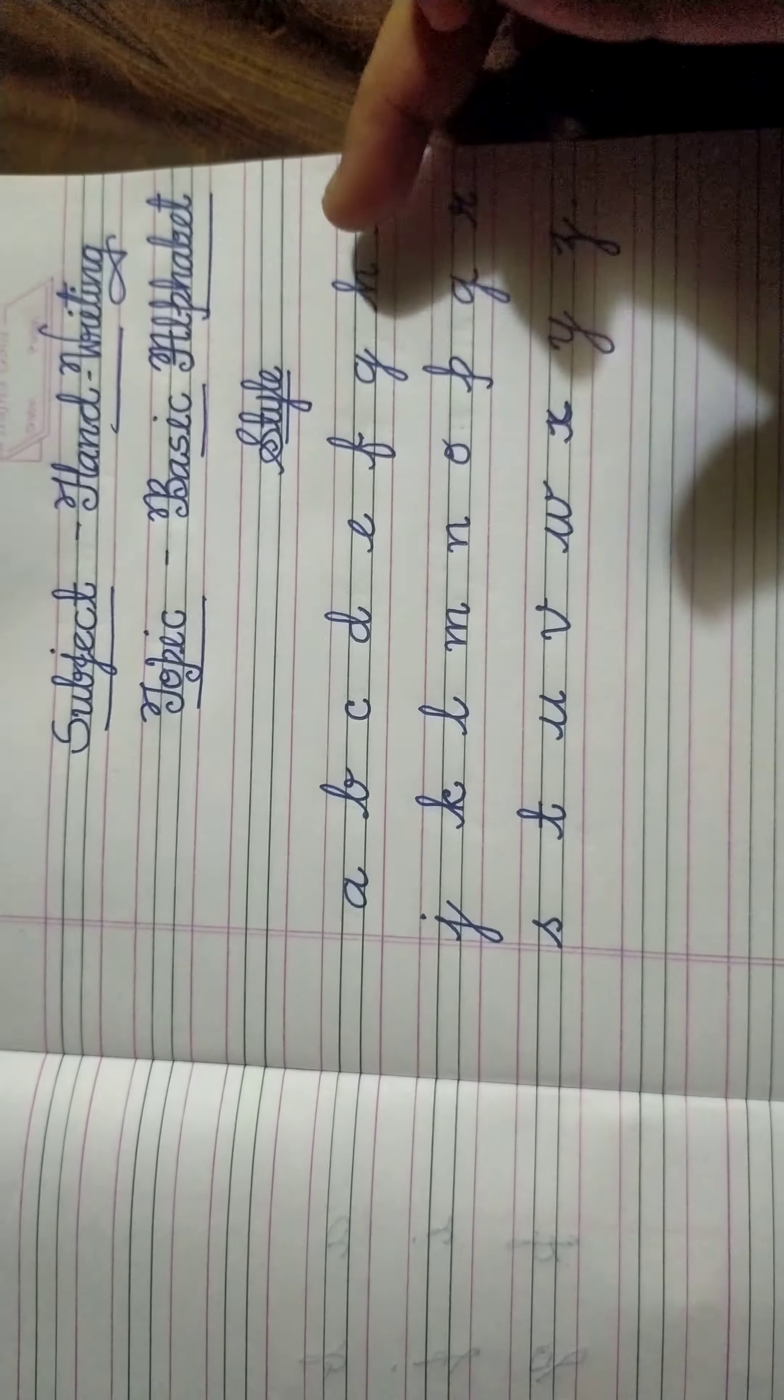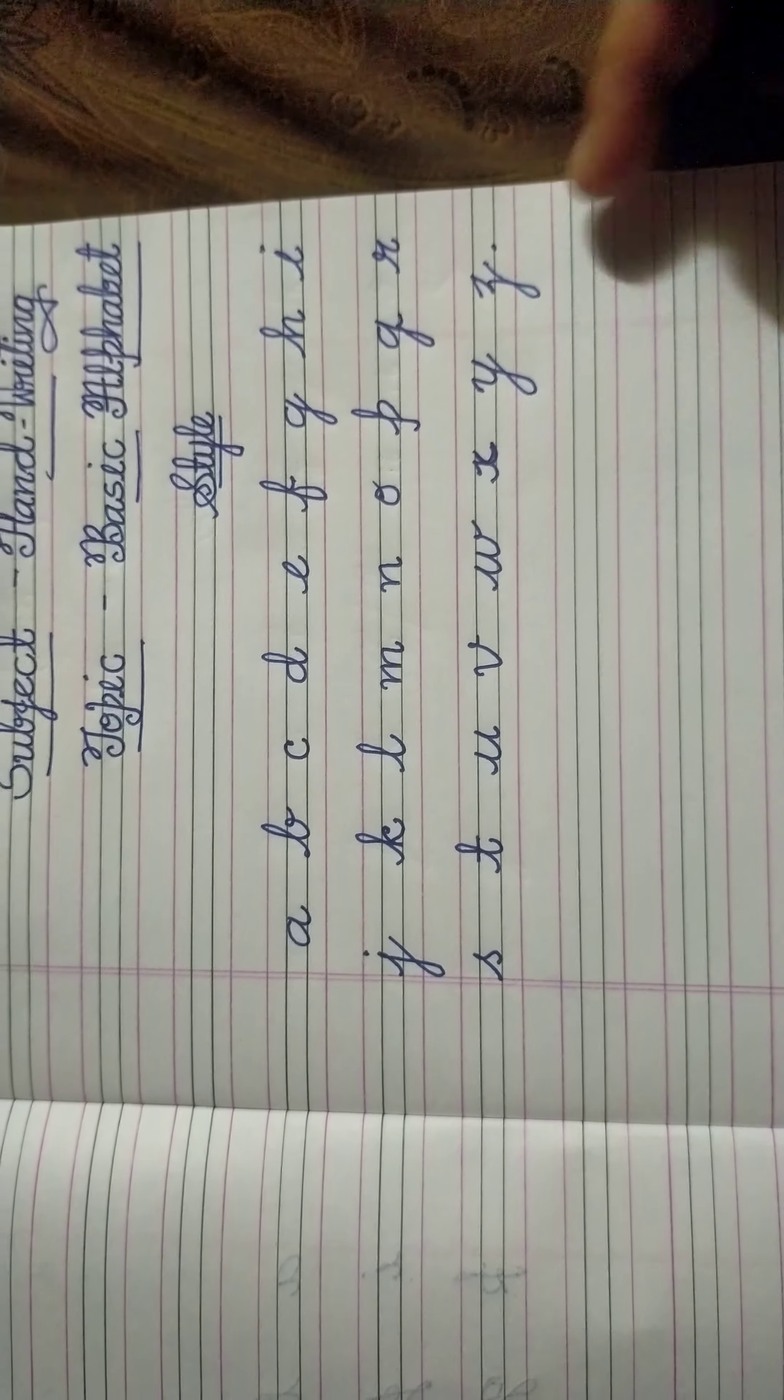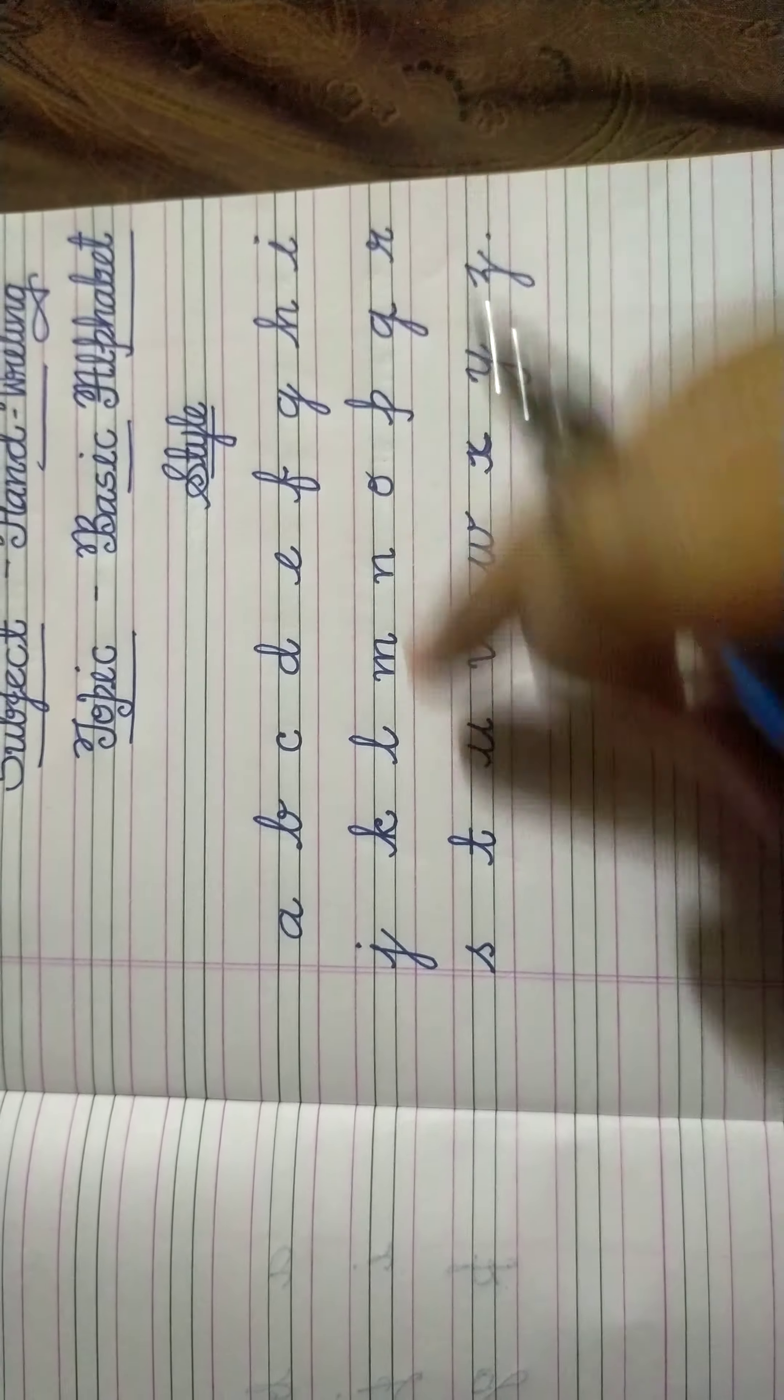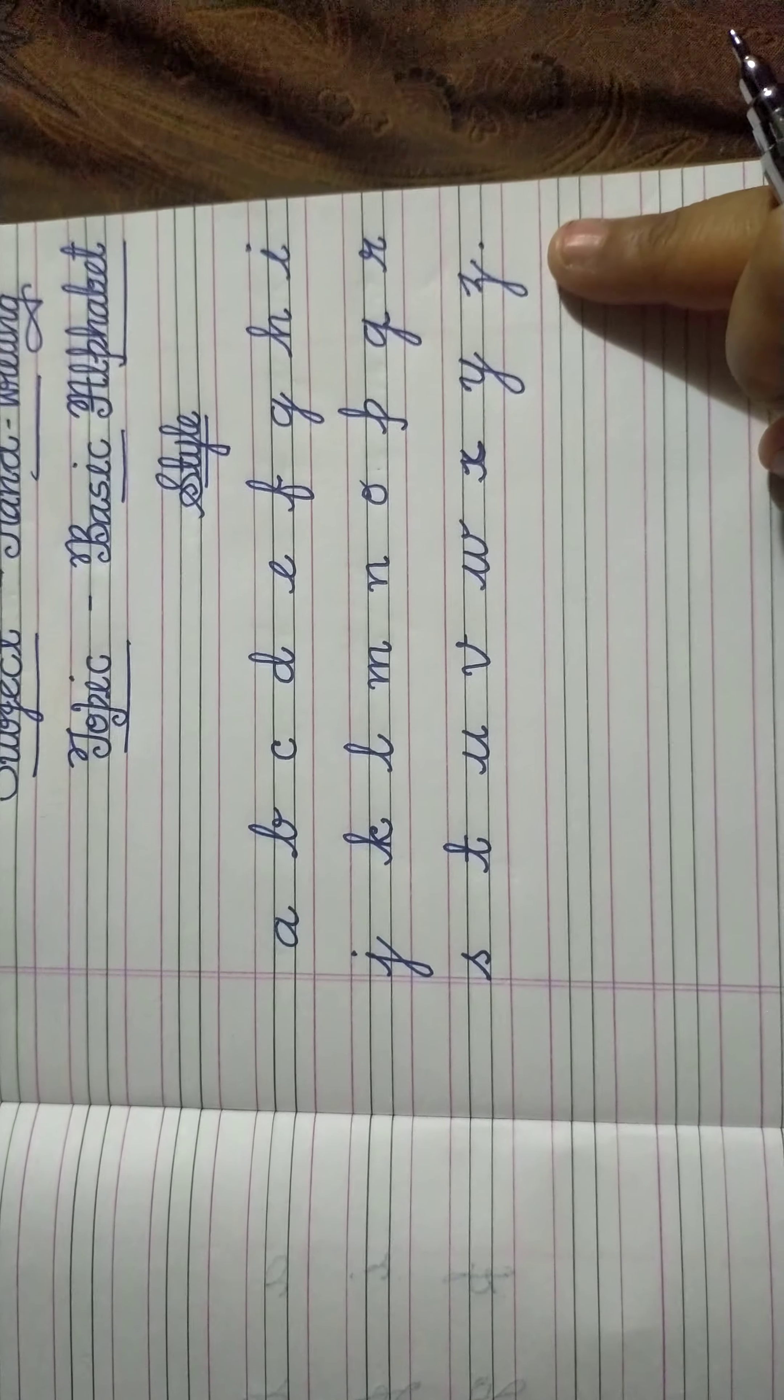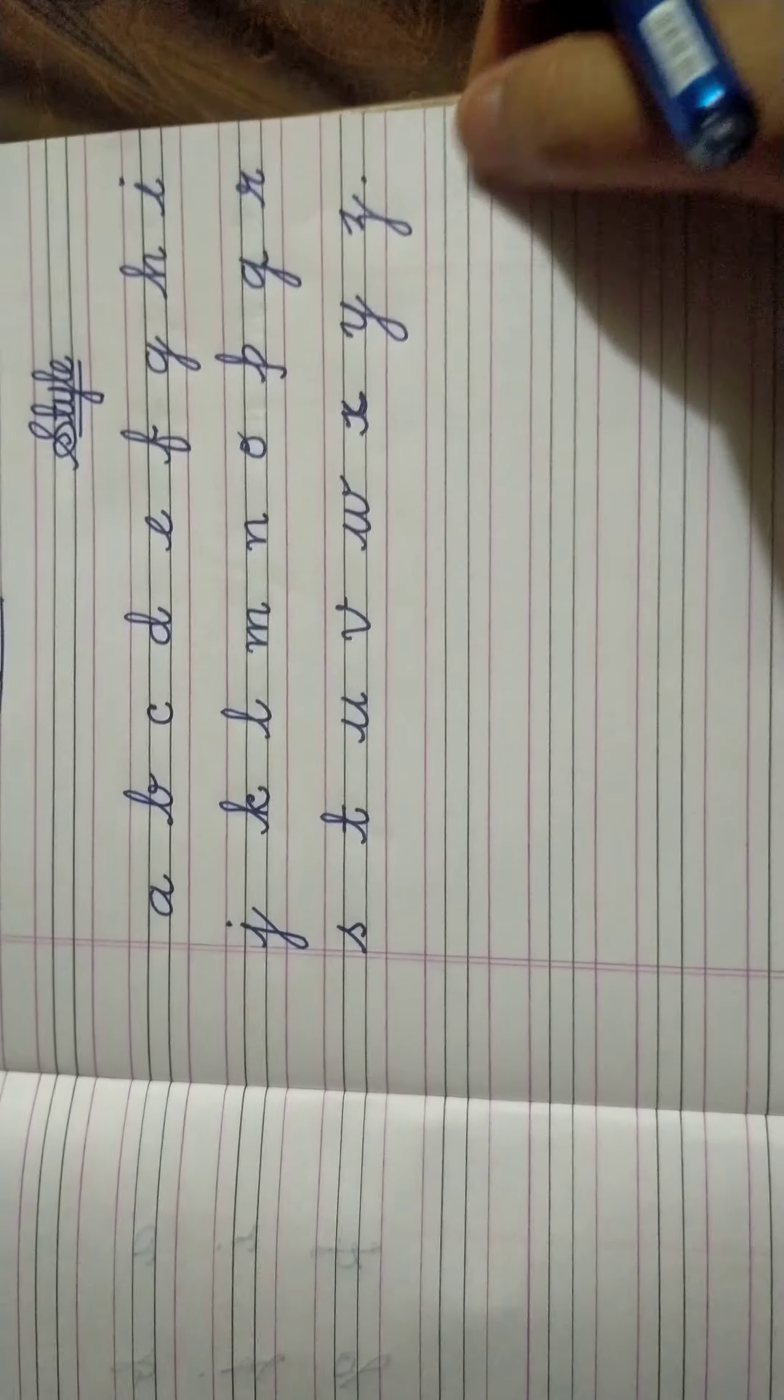This is the handwriting and these are the alphabets. These alphabets I am going to repeat here again. I have already done from A to Z. This is small alphabets. Let's start how to write this.